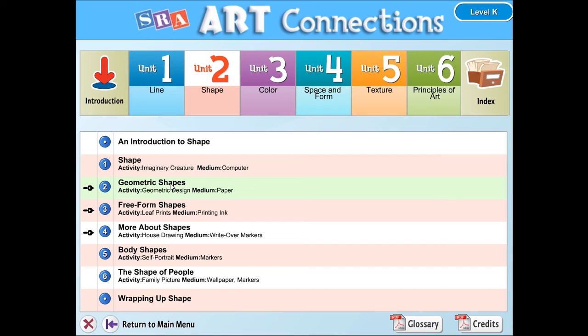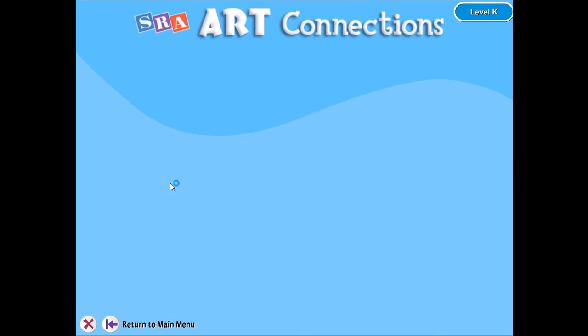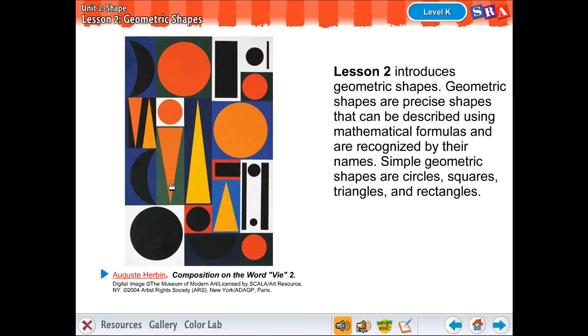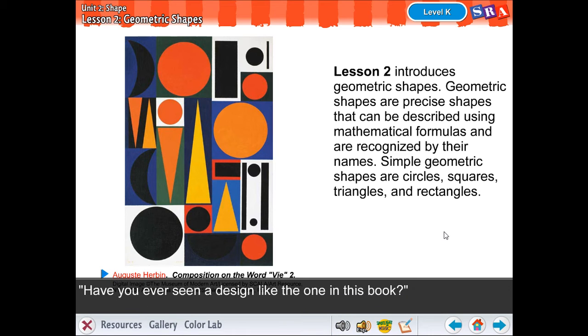Alright, we are going to be learning about geometric shapes today. Lesson 2 introduces geometric shapes. Geometric shapes are precise shapes that can be described using mathematical formulas and are recognized by their names. Simple geometric shapes are circles, squares, triangles, and rectangles.